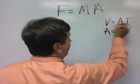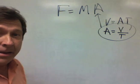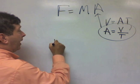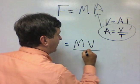I'm going to take this and I'm going to insert it into that A, and I'm going to end up with F equals MV over T.